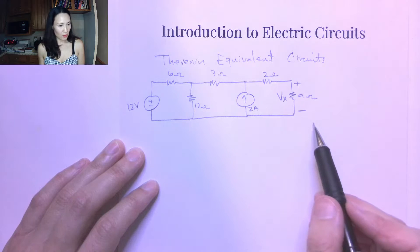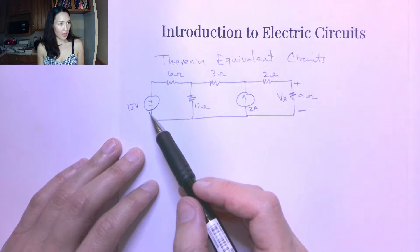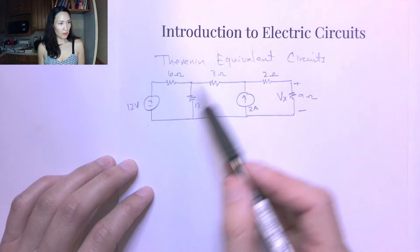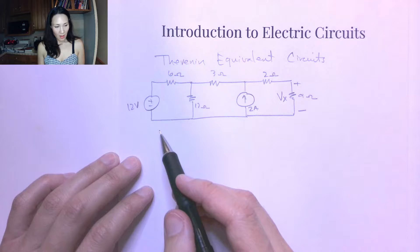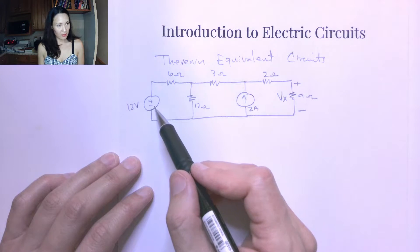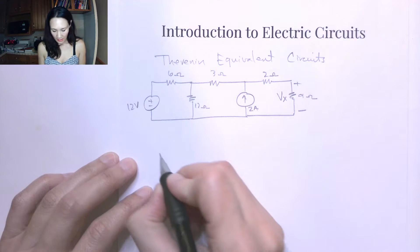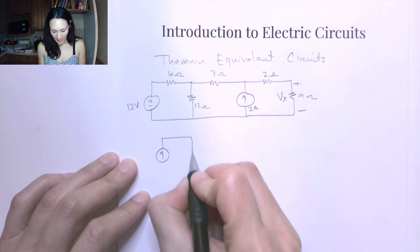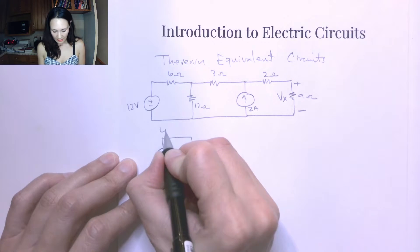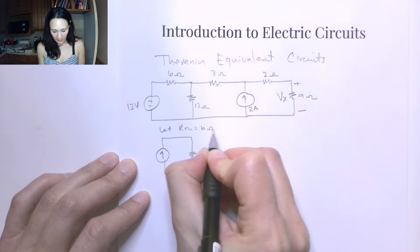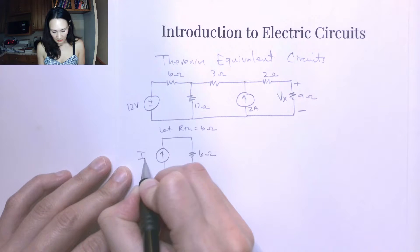If our instructions are to use source transformations to find Vx in the circuit, I'm going to start at the left-hand side and do a series of source transformations until I get all the way to the right-hand side. I'm going to replace this voltage source that's in series with a resistor with a current source in parallel with the resistor. I'll call this my R-Thevenin, so R-Thevenin is 6 ohms. This is still going to be 6 ohms, and this is going to be I-Norton.